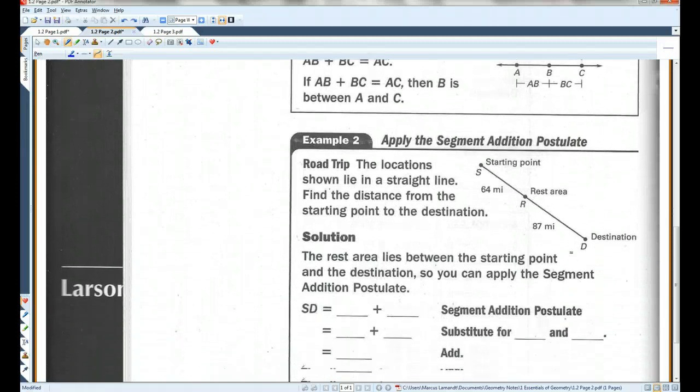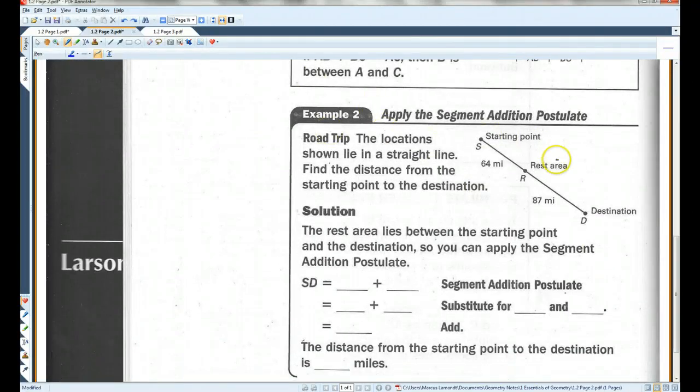For example, the locations shown lie on a straight line. Find the distance from the starting point to the destination. So SD is this segment plus this segment.